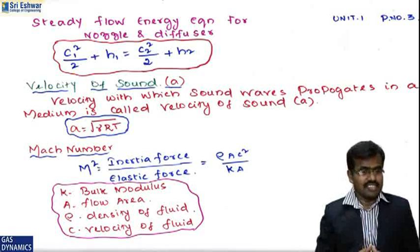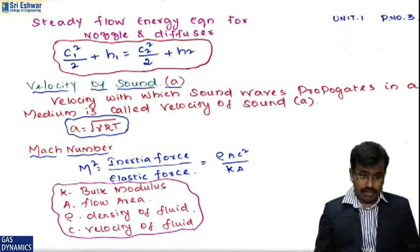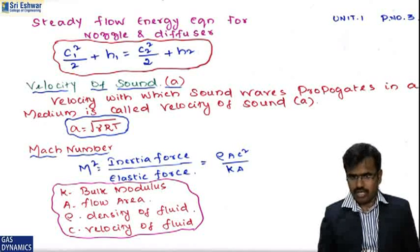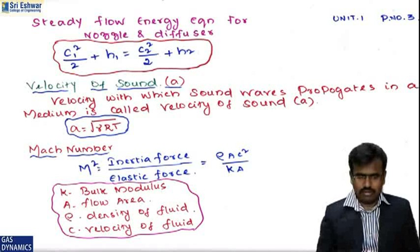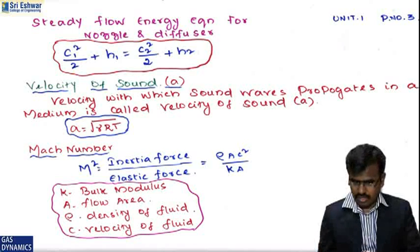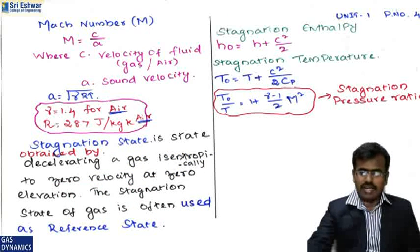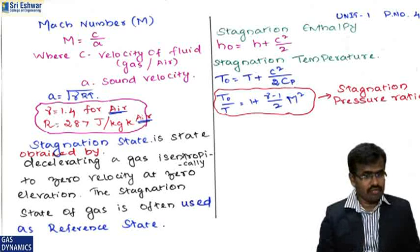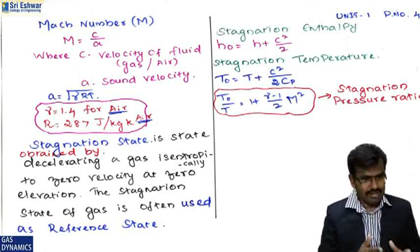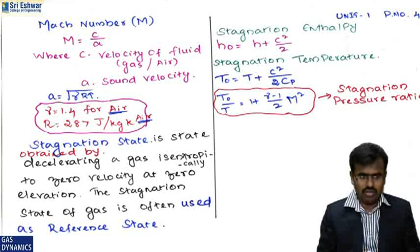The velocity of sound 'a' is the speed at which sound waves propagate in a medium, given by a = √(γRT). Mach number is the ratio of inertia force to elastic force: M = ρAc²/kA, where k is bulk modulus, A is flow area, ρ is fluid density, and c is fluid velocity. Mach number is also given by M = c/a, where c is fluid velocity and a is sound velocity. For air, γ = 1.4 and R = 287 J/kg·K.